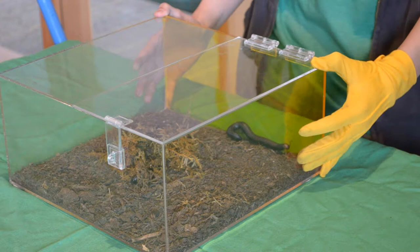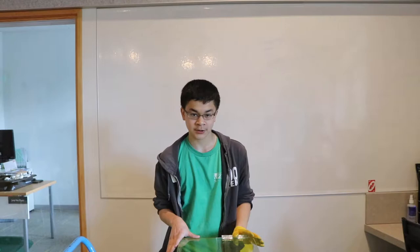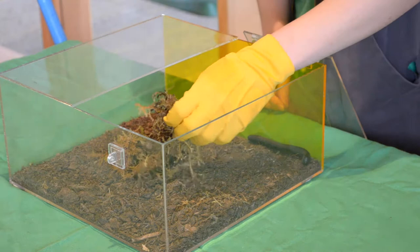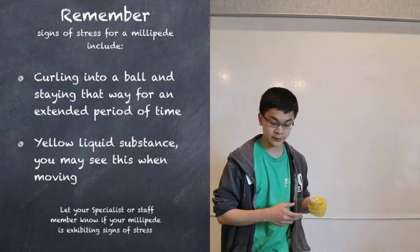Here we have a giant African millipede. The millipedes will not be on contact, so both you and the visitors will not be touching them. They will only be on display. Make sure you're wearing gloves if you decide to move the moss to give the public a better view. This is because the millipedes excrete a noxious yellow substance which can be an irritant to skin. As you can see, you can move the moss to give the public a better view of the millipedes. Signs of stress of millipedes include curling up into a ball and staying there for an extended period of time, and also excreting the yellow substance.